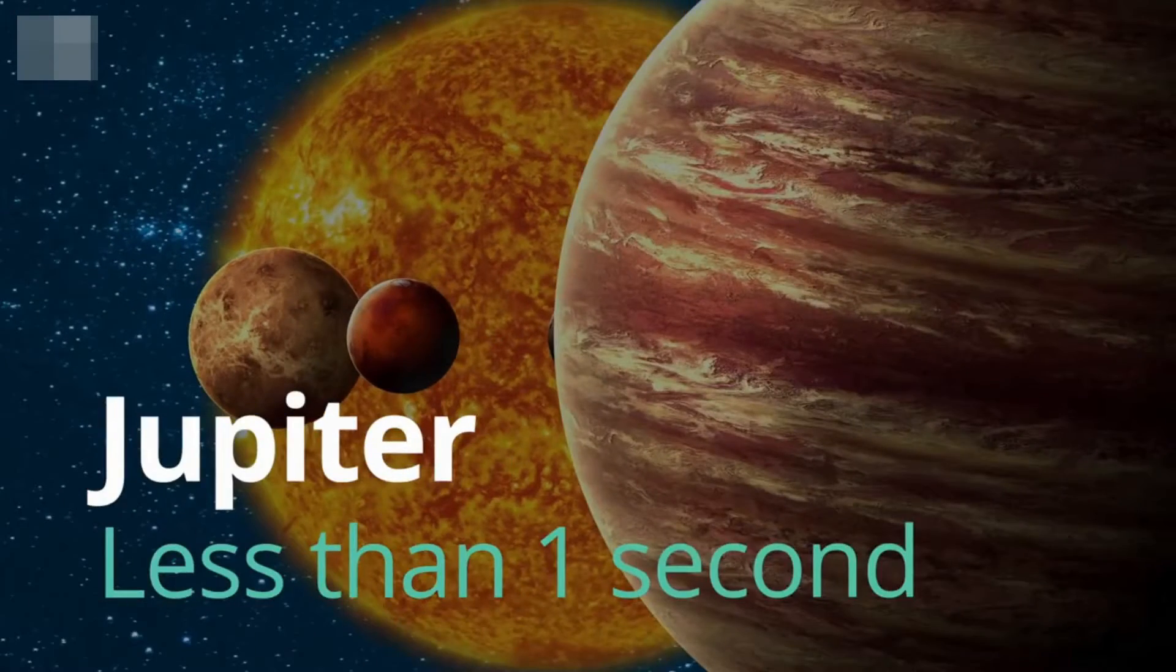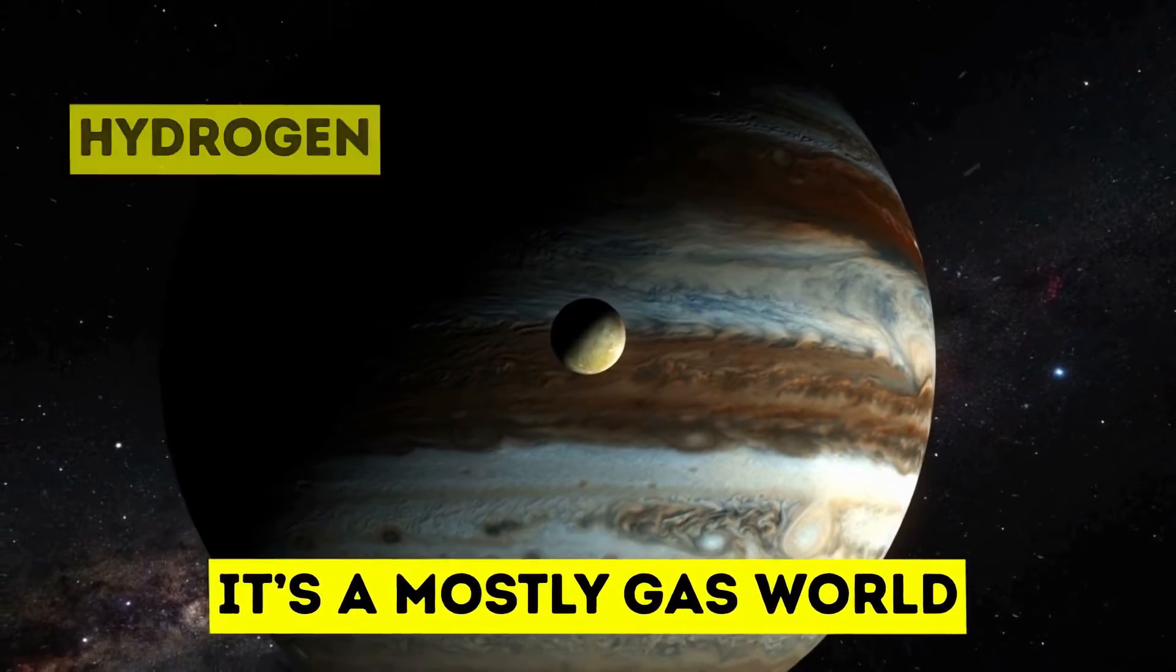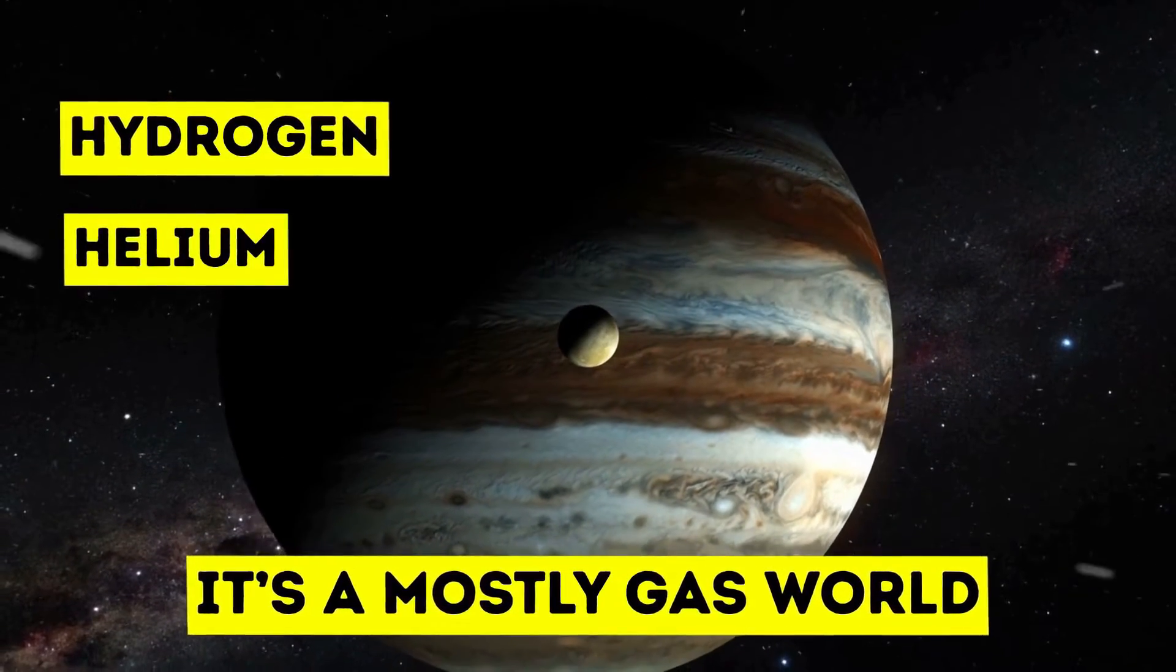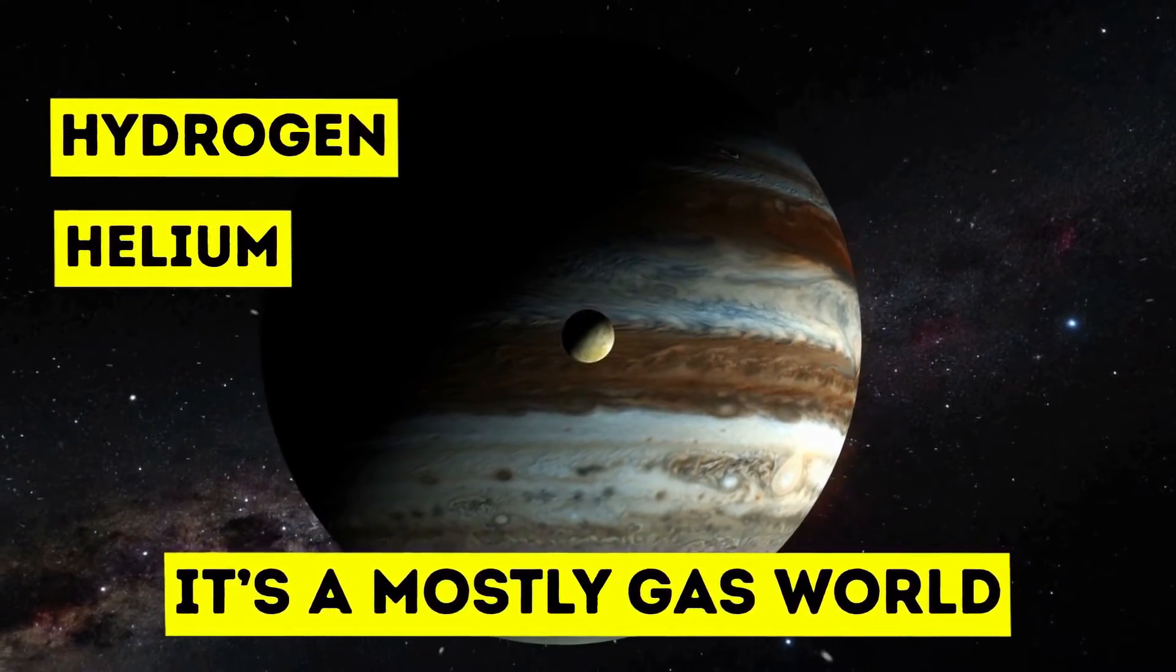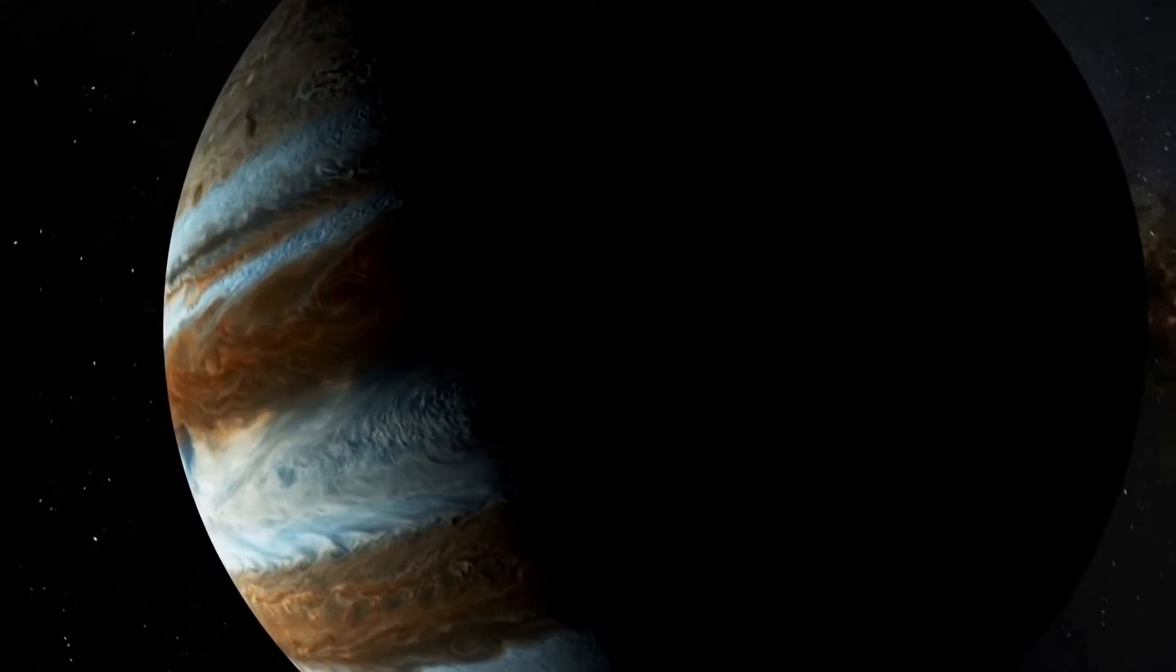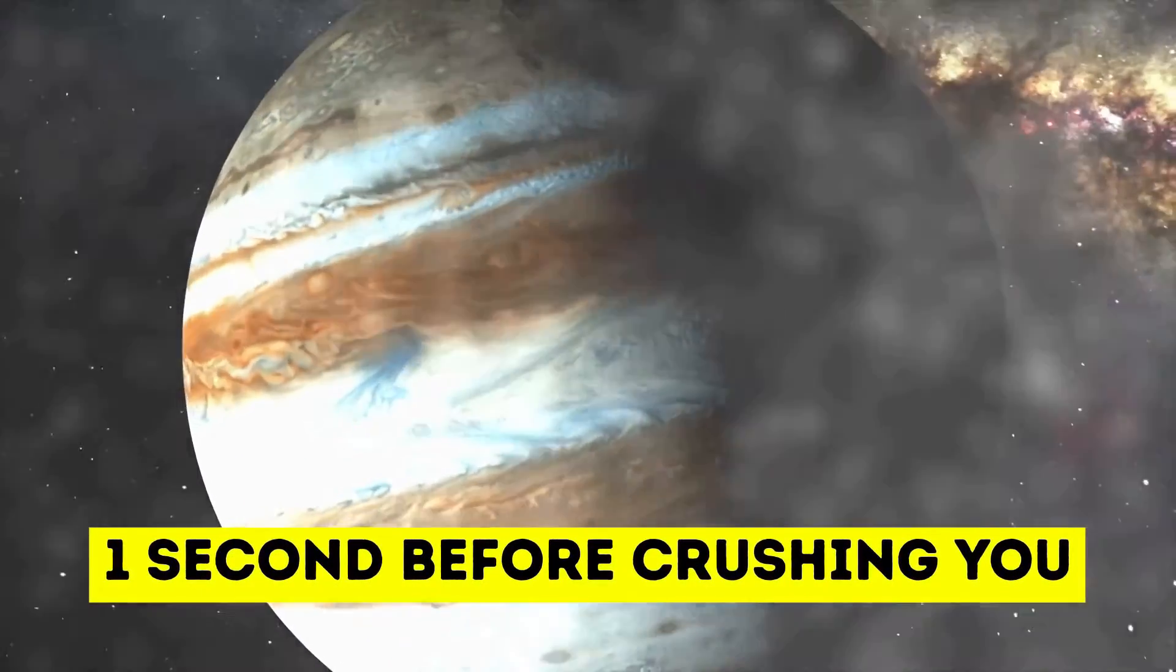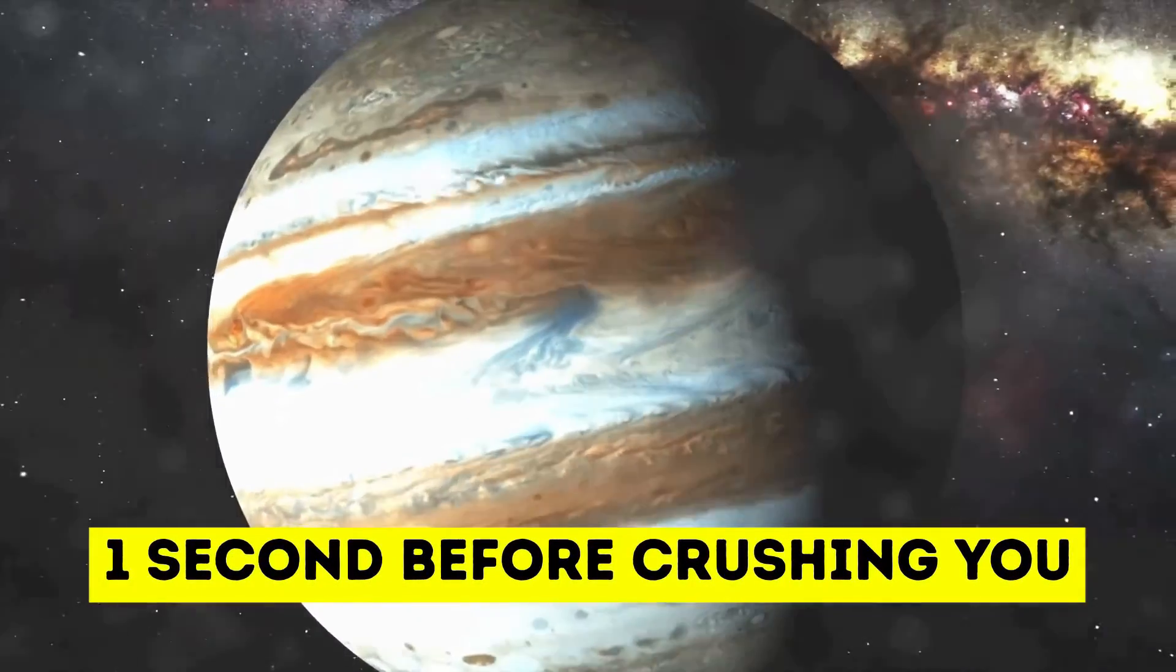Jupiter: less than one second. Being a gaseous planet, Jupiter would make for a uniquely uncomfortable life. On this enormous planet, you would descend forever into the gaseous atmosphere until you're crushed by the pressure of the planet's layers. You will die in just less than a second.